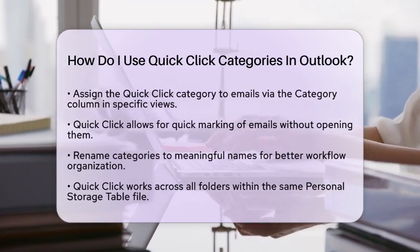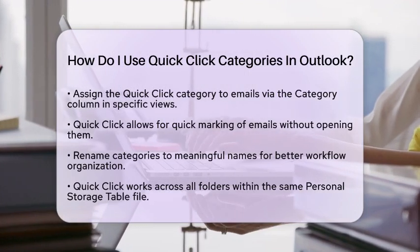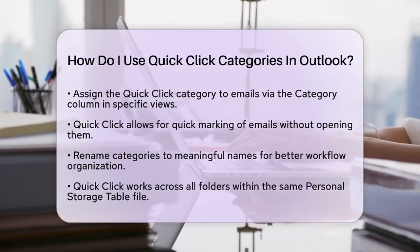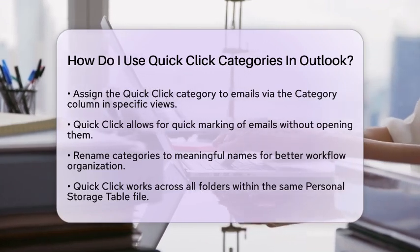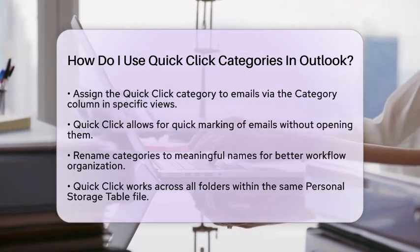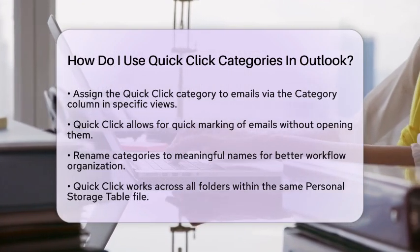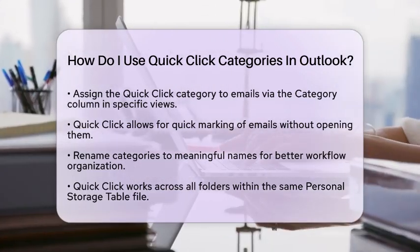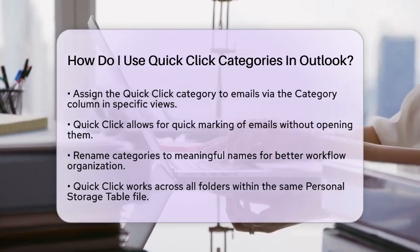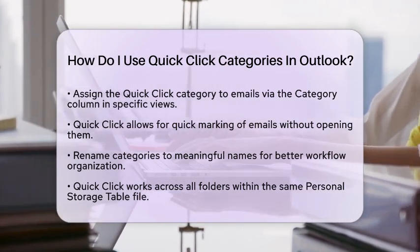Here are some practical tips for using Quick Click categories. This feature allows you to mark emails quickly without having to open each one or navigate through multiple menus. Consider renaming categories to something meaningful, like Key Email, to better reflect your workflow. Quick Click works across all folders within the same personal storage table file, so your default category applies universally. Keep in mind that Quick Click may not function properly if you have the Show as Conversations view enabled — you might need to adjust your view settings for it to work smoothly.